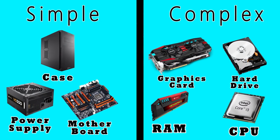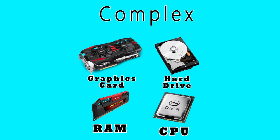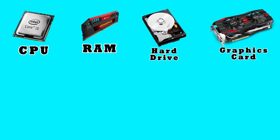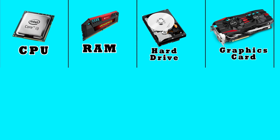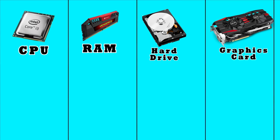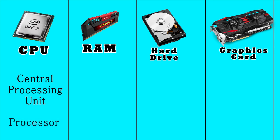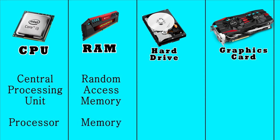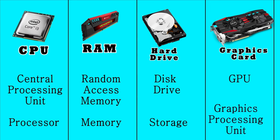So that's it for the simple components. Now let's move on to the more complex parts — the ones that deal with data. The four main components to keep in mind here are CPU, RAM, hard drive, and graphics card. Keep in mind that CPU is also known as the central processing unit or processor — these terms are completely interchangeable. RAM stands for random access memory and is often referred to as just memory. A hard drive is often referred to as a disk drive or storage, and a graphics card is also known as a GPU or graphics processing unit.